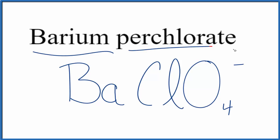Because barium is a metal and perchlorate is a group of nonmetals, this is a polyatomic ion here, we need to think about charge when we write the formula for barium perchlorate.